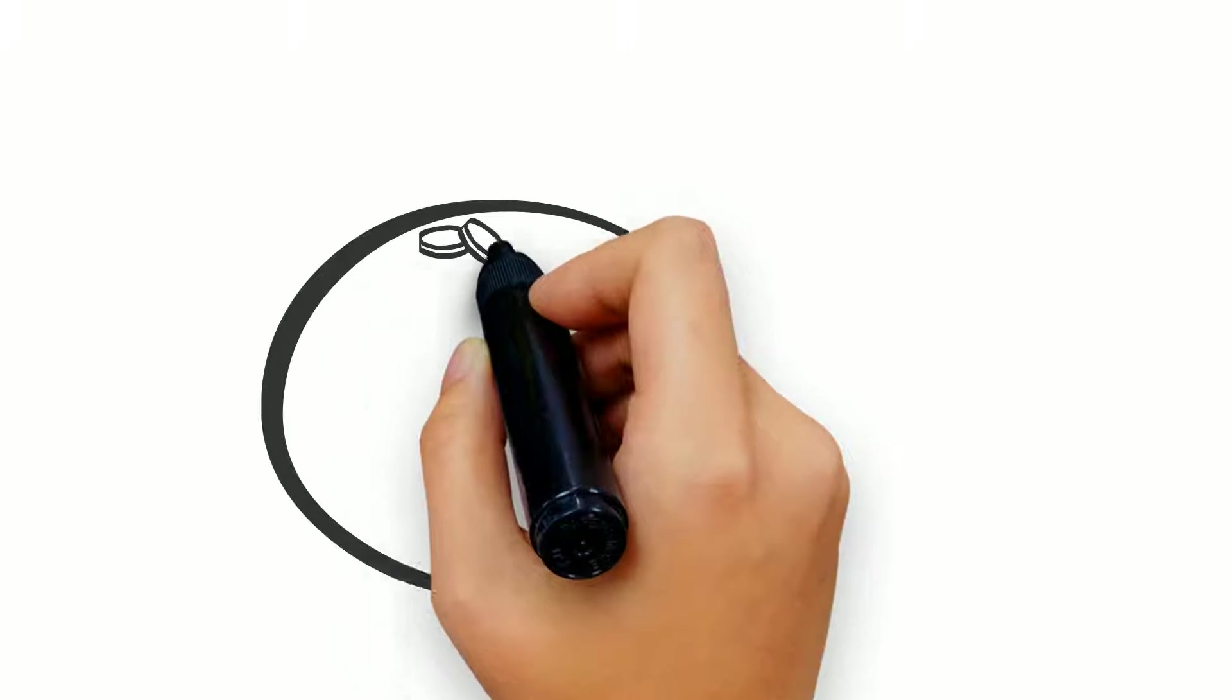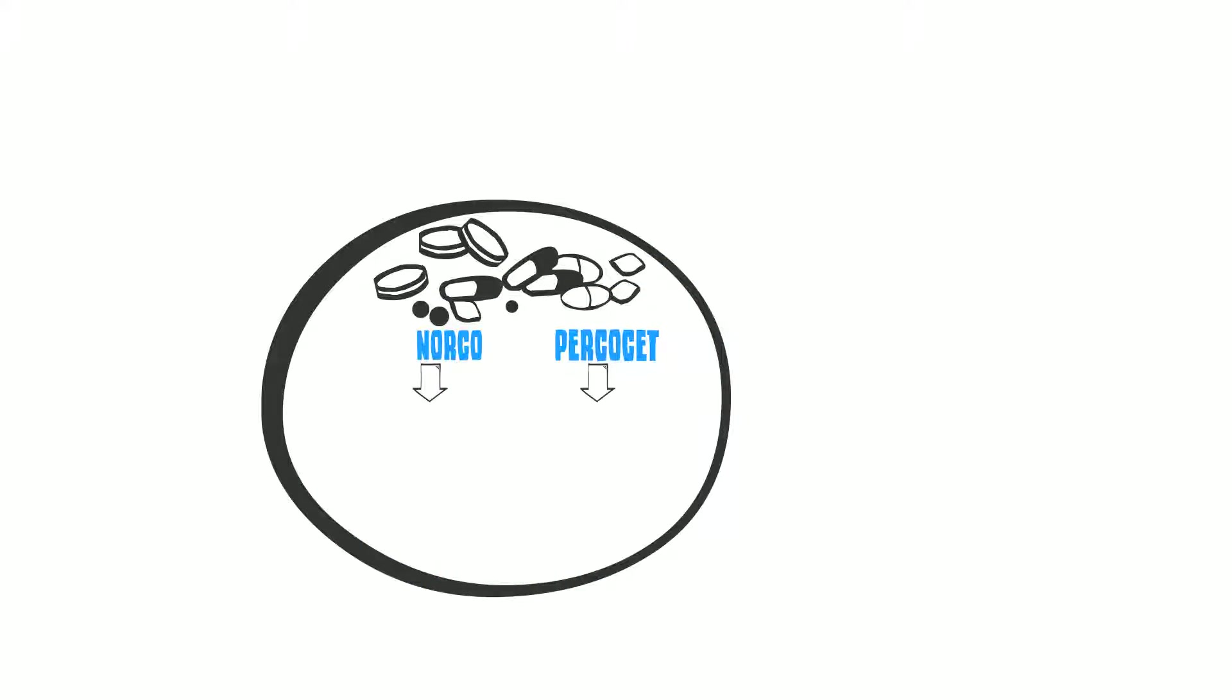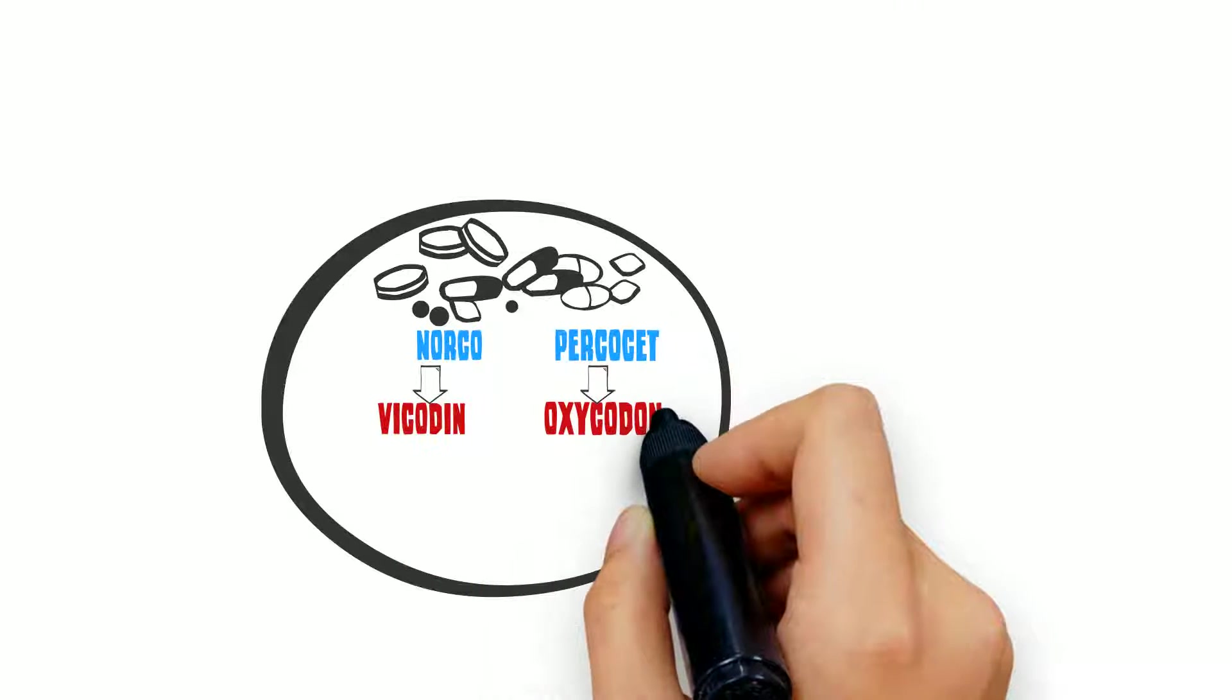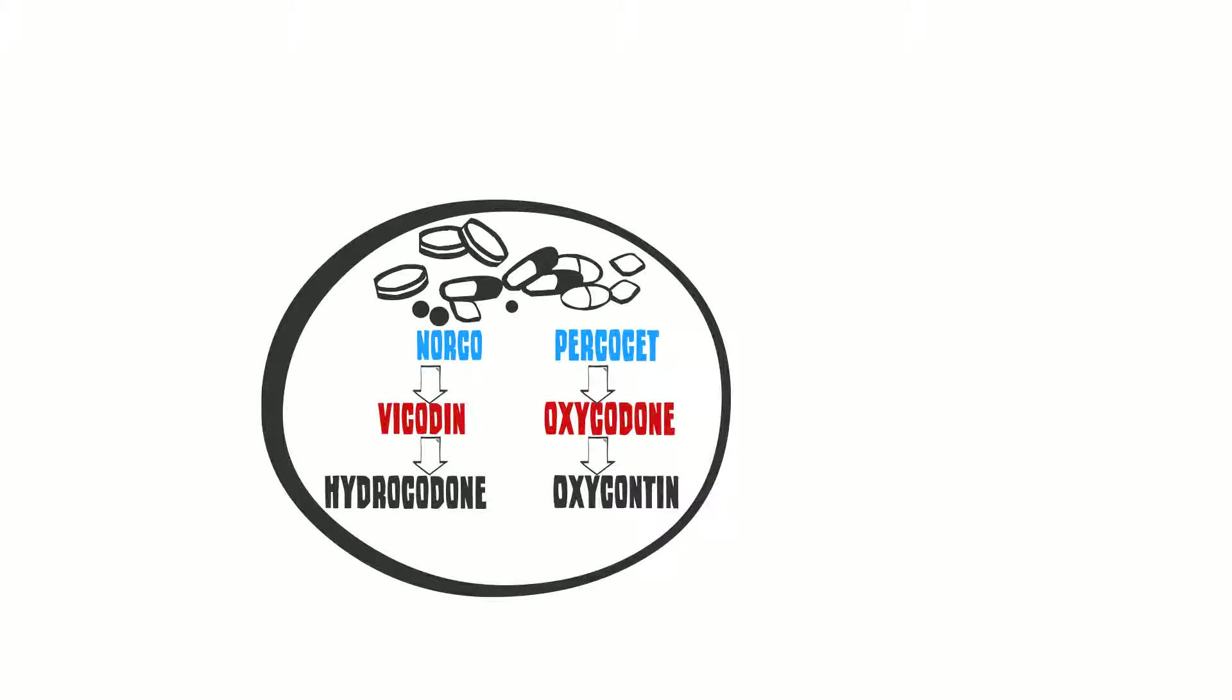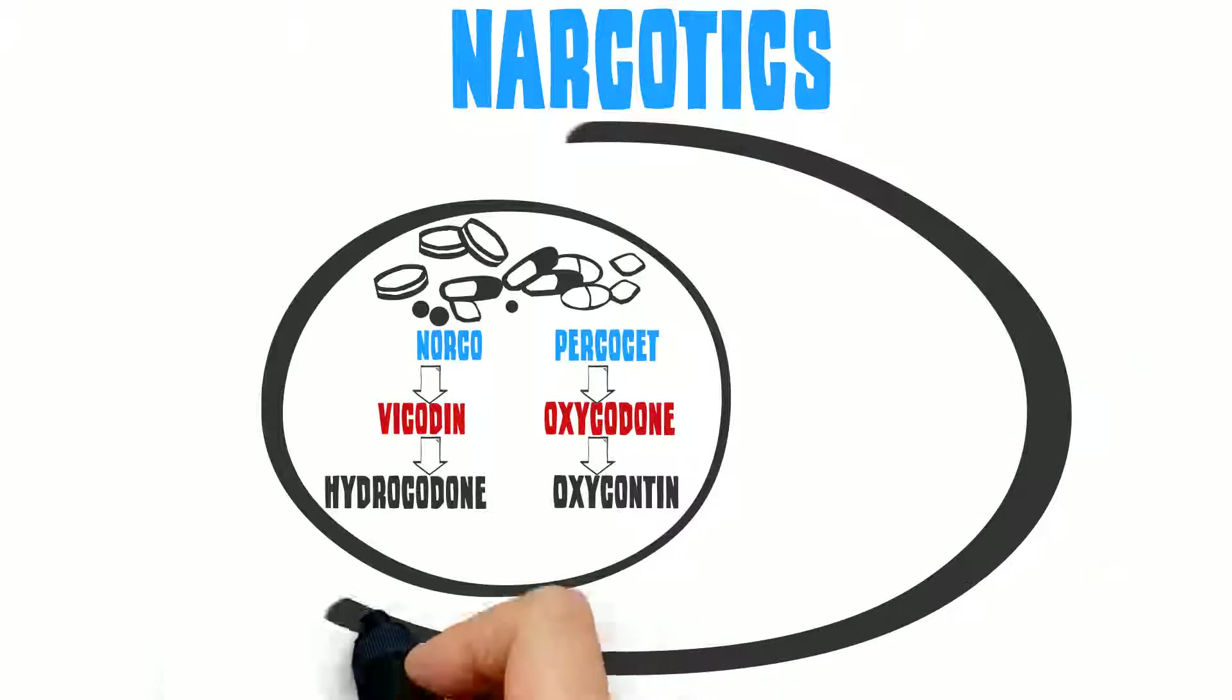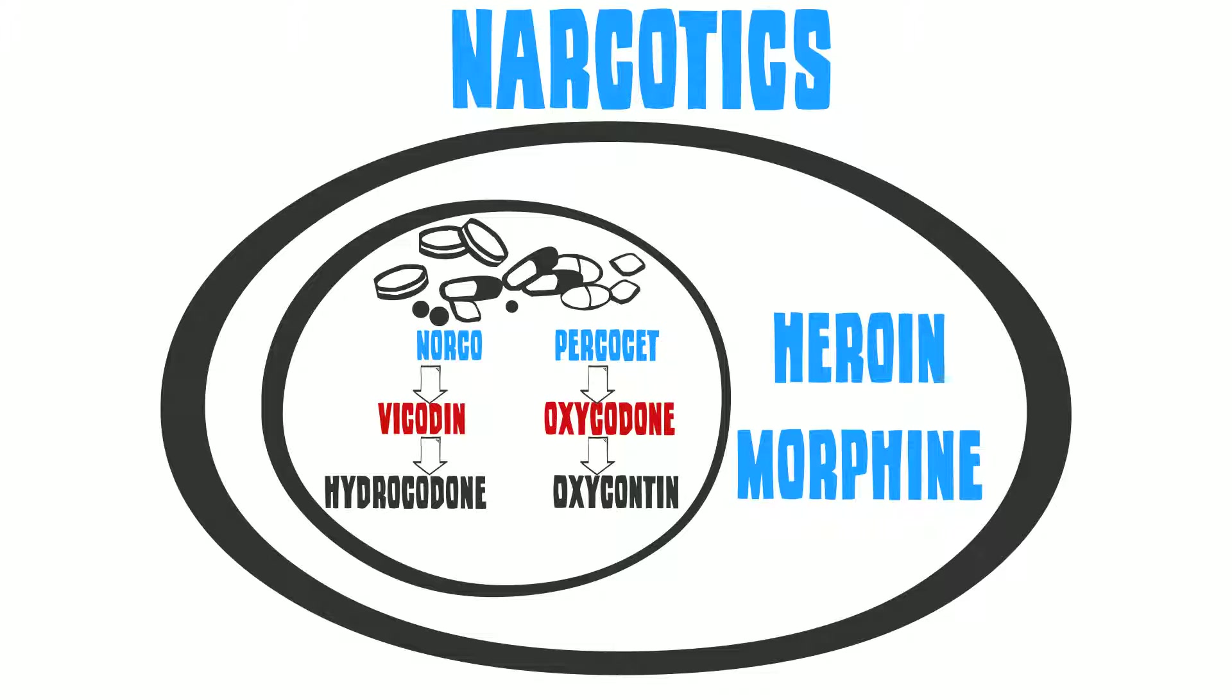The common prescription pain pills, such as Norco, Percocet, which in the generic form is called oxycodone, Vicodin, which is also called hydrocodone, and OxyContin, are all narcotics. This means that these drugs are in the same family as heroin and morphine.